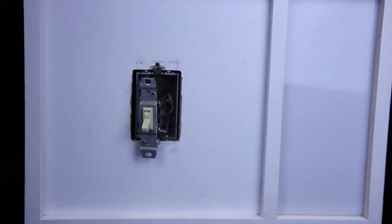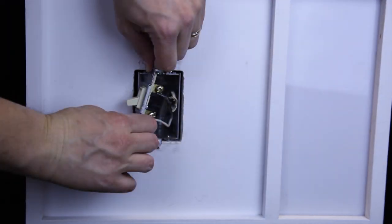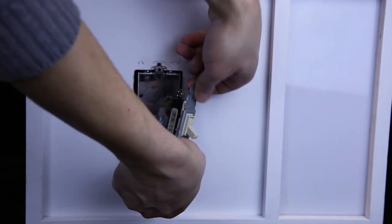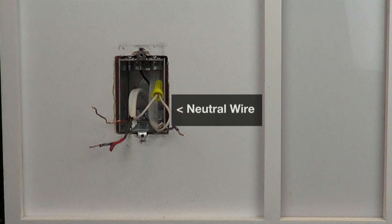On a standard single-pole switch, you have two wires connected to the switch, plus a ground wire. Make sure that you have a neutral wire connection in the wall. Most newer homes have neutrals in each wall box, which are usually white wires in the back of the box.